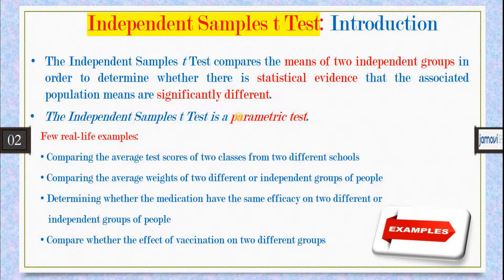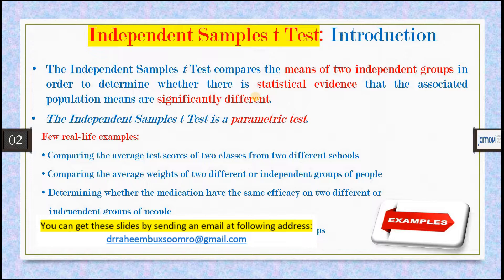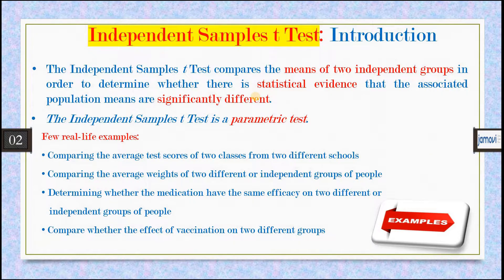There are two groups of tests: parametric tests and non-parametric tests. Parametric tests are those which fulfill all the parameters of the test before applying it. For the independent sample t-test, there are eight parameters that must be fulfilled before applying it. Alternatively, if your data is not parametric, other tests are available, which I have discussed in the coming slides.